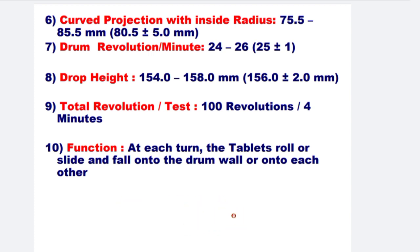Number 7: drum revolutions per minute — 24 to 26. Number 8: drop height — 154 to 158 mm. Number 9: total revolutions per test — 100 revolutions per 4 minutes. Number 10: function — at each turn, the tablets roll or slide and fall onto the drum wall or onto each other.